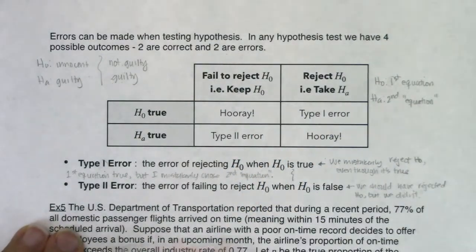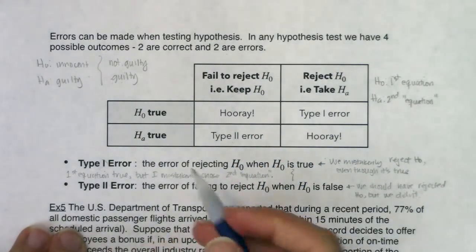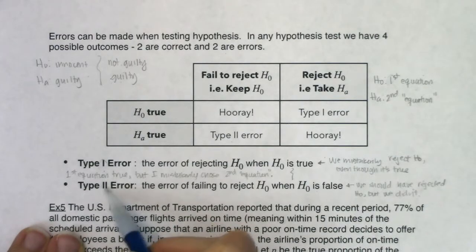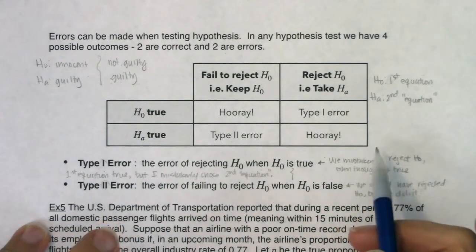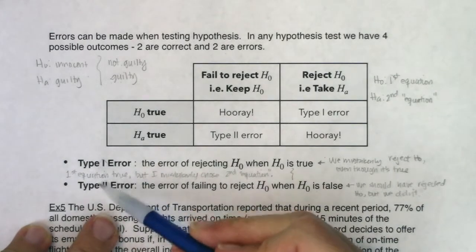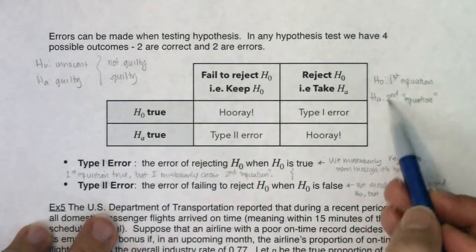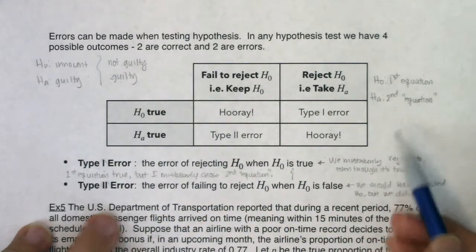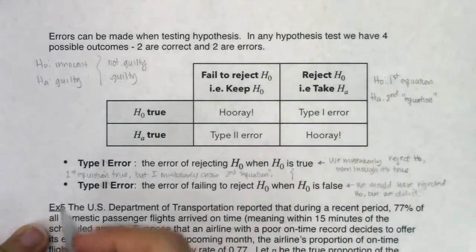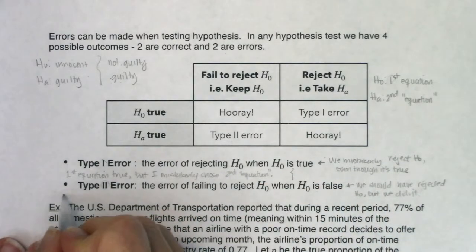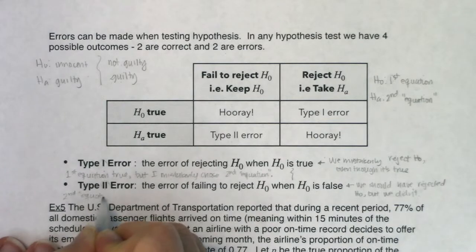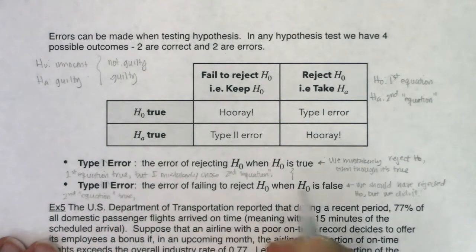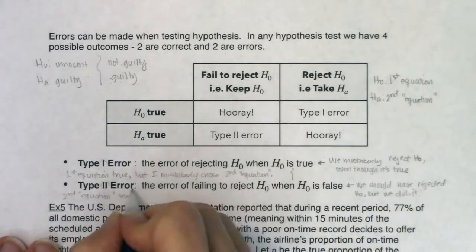For a Type 2 error, the second equation was true because whatever the type of error, that was the equation that was the true one. So in a Type 2 error, the second equation — H_A — was true, but I mistakenly chose the first equation.